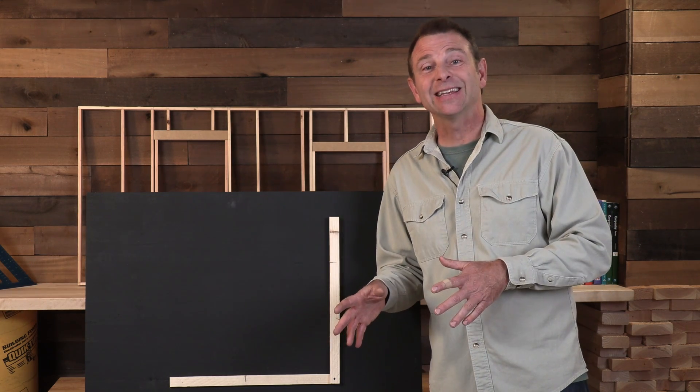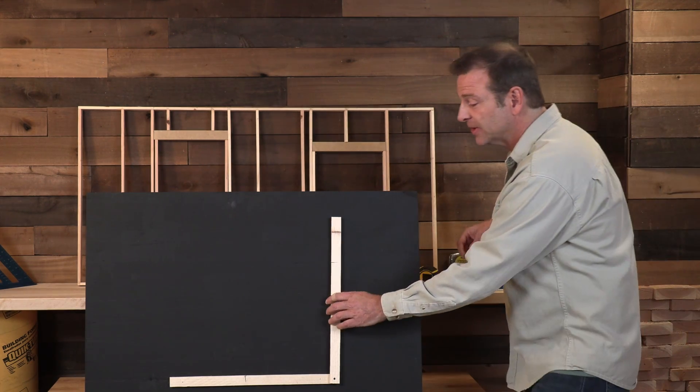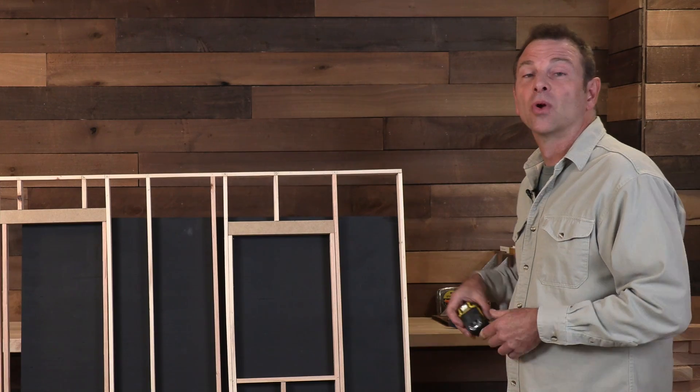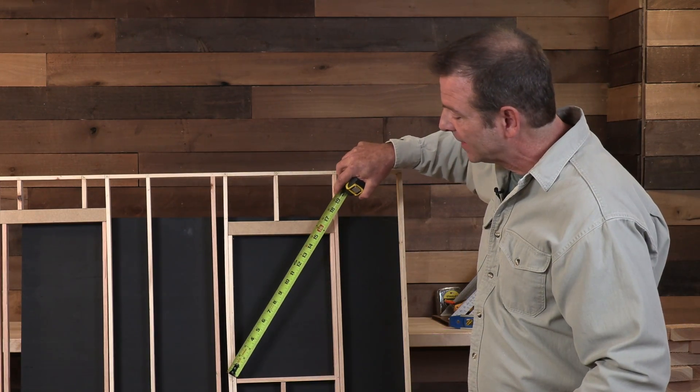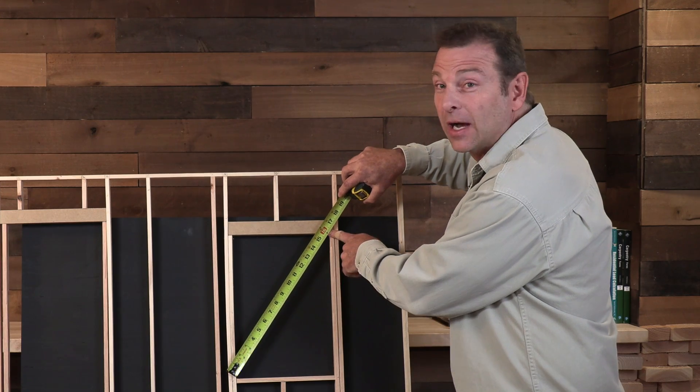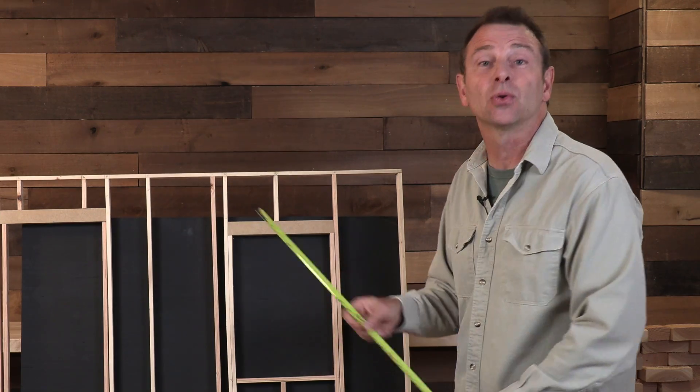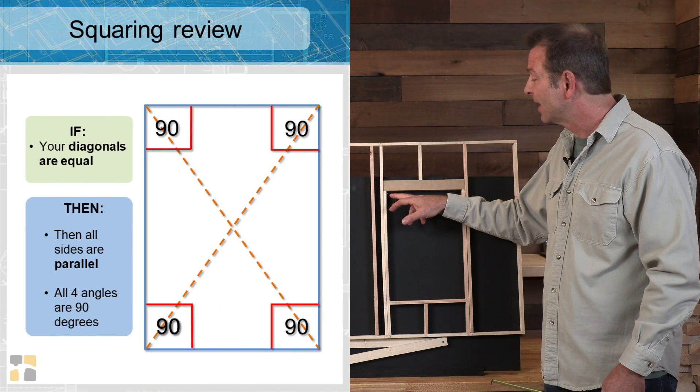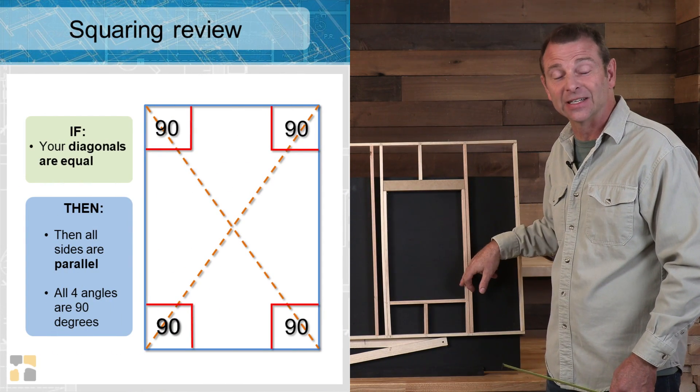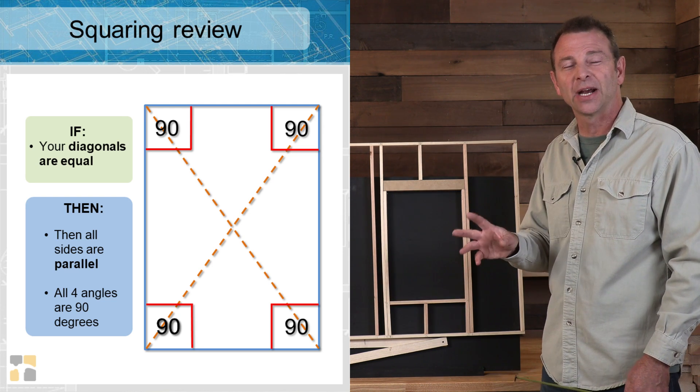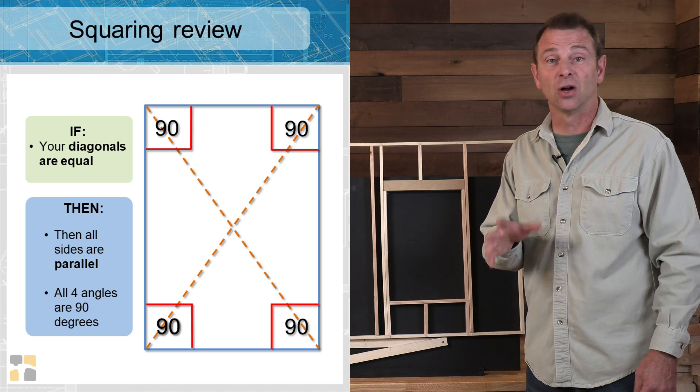And we're going to do that on anything that has four sides. That's either a rectangle or a square. So this equal diagonal method works like this. If we can take our tape measure and measure from this corner to the opposite corner, and we can make that dimension equal the measurement from this corner to this corner, then that tells us a lot about this rectangle. It tells us, number one, that all of these corners are 90 degrees, exactly 90 degrees. And it also tells us that the left and right side are parallel and that our top and bottom edges are also parallel.